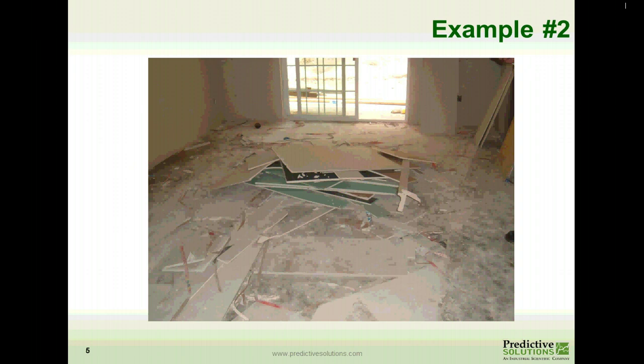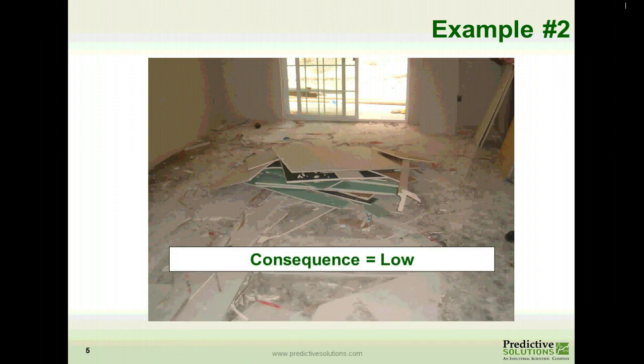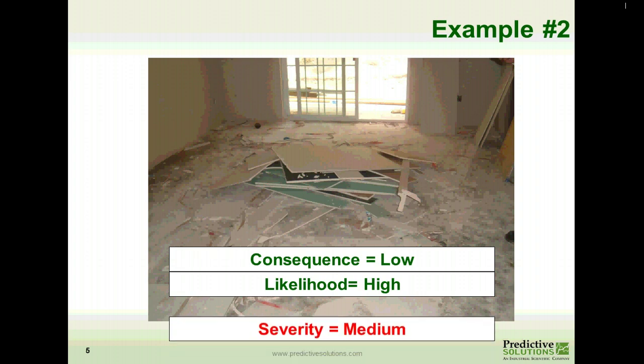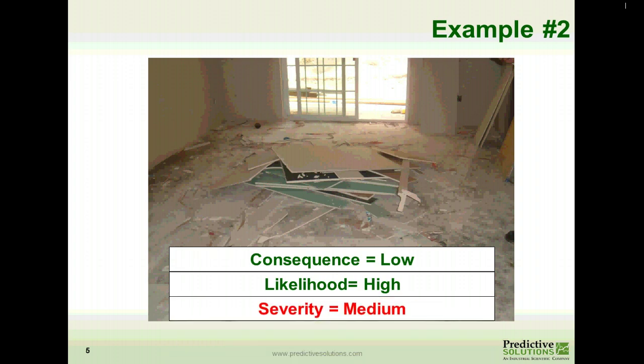Example number two: here we have a cluttered room with poor housekeeping. If someone were to fall based on this hazard, it would most likely result in a low consequence — most likely a low-risk injury. But the likelihood, based on certain traffic conditions and carrying equipment or not being able to see the floor properly, would be high. Low consequence with high likelihood gives a severity of medium.